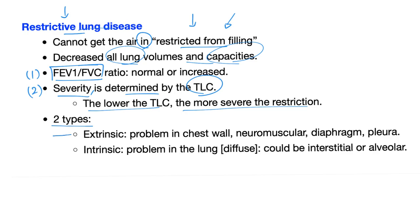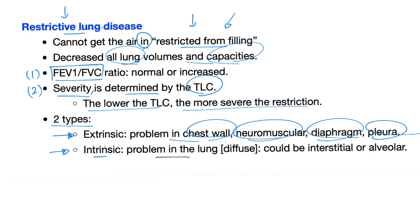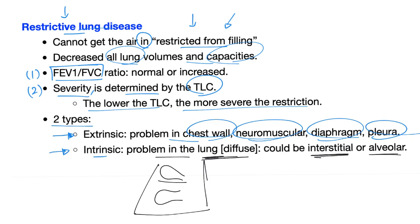There are two types of restrictive lung disease: extrinsic, which is not the lung's fault, and intrinsic, which is the lung's fault. Extrinsic problems could be in the chest wall, neuromuscular, diaphragm, pleura, or abdomen. Intrinsic disease is in the lung itself — either interstitial or alveolar. Interstitial lung disease affects the connective tissue between alveoli, such as interstitial pulmonary fibrosis. Alveolar restrictive lung disease is in the alveolus, such as alveolar proteinosis.